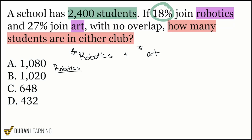For robotics, I noticed that robotics was 18% of our student population, and we have 2,400 students total. So for robotics, this is going to be 18% of 2,400. A quick mental math trick: when we turn the percentage into a decimal, we can leave it as 18 and move the decimal twice on the 2,400, so instead of 2,400 it becomes 24. As long as we move the decimal twice on one of the two numbers, we're good. So now we have 18 times 24.